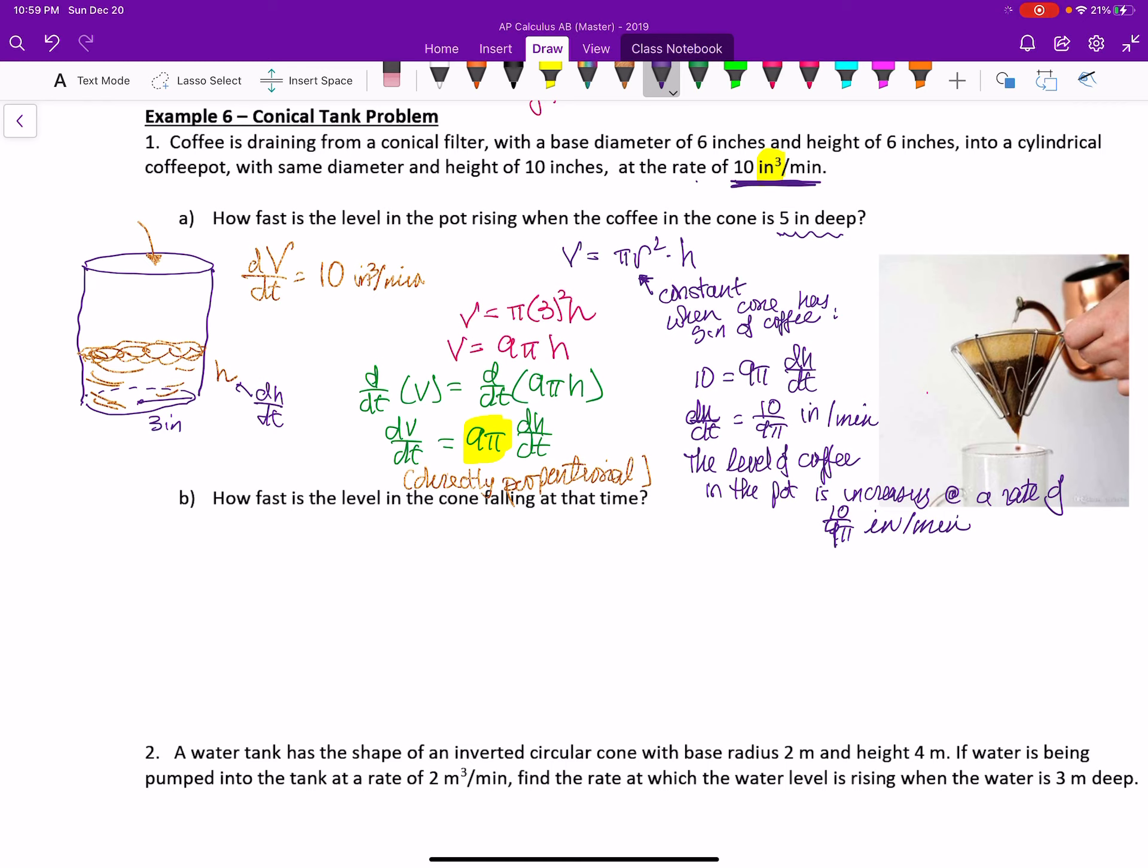But to finish and answer the question, when the coffee in cone is 5 inches deep. Again, if you forgot this piece here in this particular problem, you would get away with it, because it's a constant rate for the height in the cylinder all of the time. And the reason that is, is because they happen to be directly proportional.